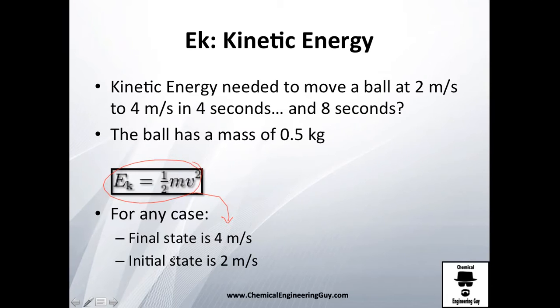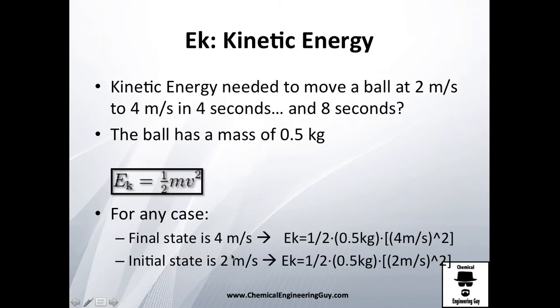So final state is four, initial state is two. Let's do some numbers. The initial energy and the final—sorry, final and initial—this is the half from this equation. Now the mass is 0.5 kilos, so we got it.